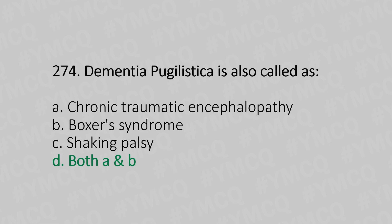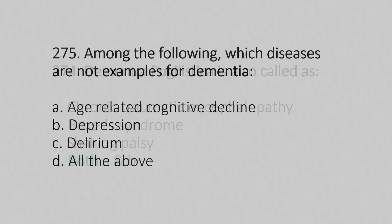Now let's move to question number 275. Among the following, which diseases are not examples of dementia? Option A, age-related cognitive decline; Option B, depression; Option C, delirium; Option D, all of the above. And the answer is Option D, all of the above.